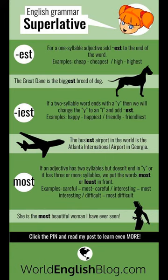Superlatives ending in '-est': for one-syllable adjectives, we simply add '-est' at the end of the word to indicate the superlative. For example, 'cheap' becomes 'the cheapest,' and 'high' becomes 'the highest.' The Great Dane is the biggest breed of dog.